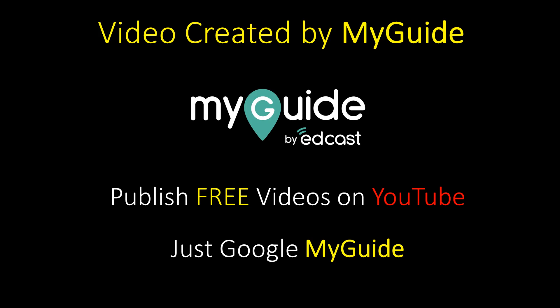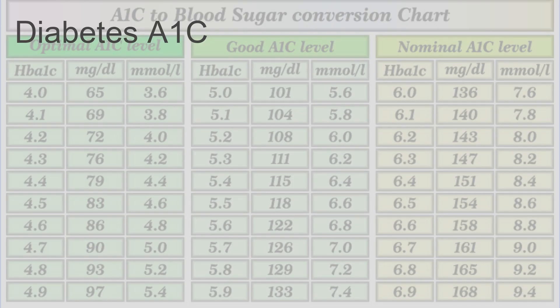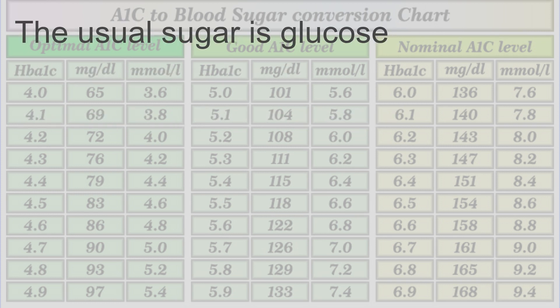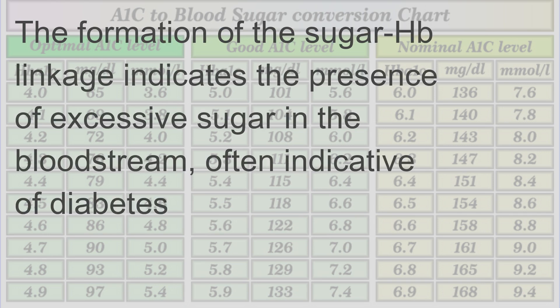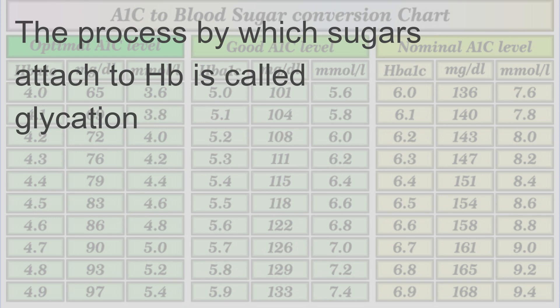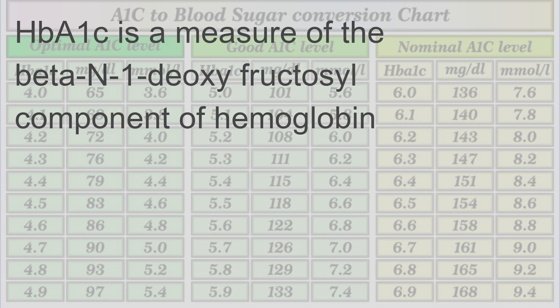Diabetes A1C: glycated hemoglobin is a form of hemoglobin that is chemically linked to a sugar, usually glucose. The formation of the sugar-hemoglobin linkage indicates the presence of excessive sugar in the bloodstream, often indicative of diabetes. A1C is of particular interest because it is easy to detect. The process by which sugars attach to hemoglobin is called glycation.